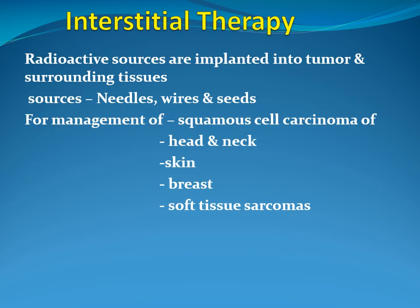Interstitial therapy involves implanting the radioisotope into the tumor in the form of needles and wires. This is most commonly used for treatment of squamous cell carcinoma of the head and neck region. The most commonly used radioisotope is iridium, and it can also be used for cancers of the skin, breast, and soft tissue sarcomas.